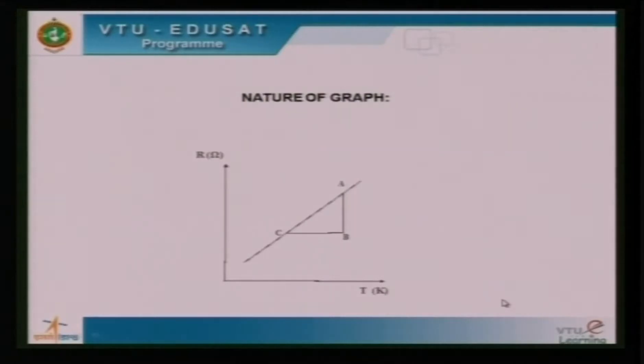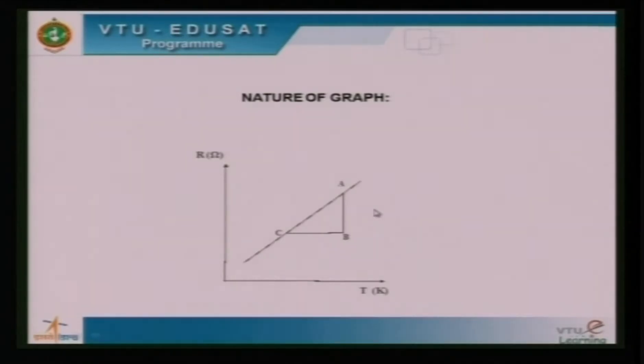Then we plot graph of resistance versus temperature in Kelvin. Resistance is plotted along the y-axis and temperature along the x-axis. Then we find the slope of this plotting and we have to insert the value of slope and square it and insert in the Fermi energy formula which is given by B into slope square divided by 1.6 into 10 power minus 19 which gives us the Fermi energy value in electron volt. Here B is nothing but NE square pi AR square divided by L root of 2 ME whole square, where N is number of electrons per unit volume which is also known as electron concentration. E is electronic charge 1.6 into 10 power minus 19 Coulomb. Pi is a constant 3.14.